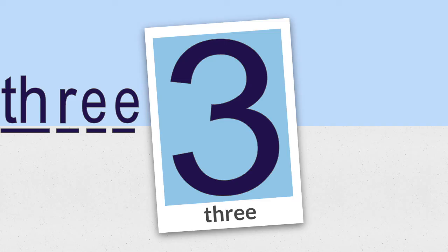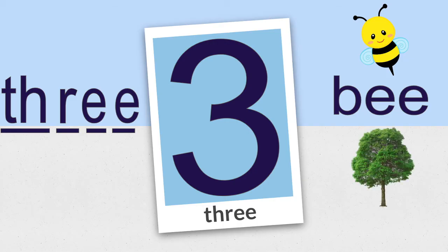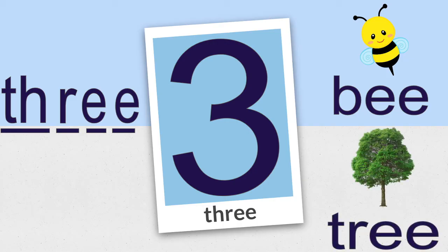There are some other words that have two e's at the end, like the word bee — b, e, e — or tree — t, r, e, e.